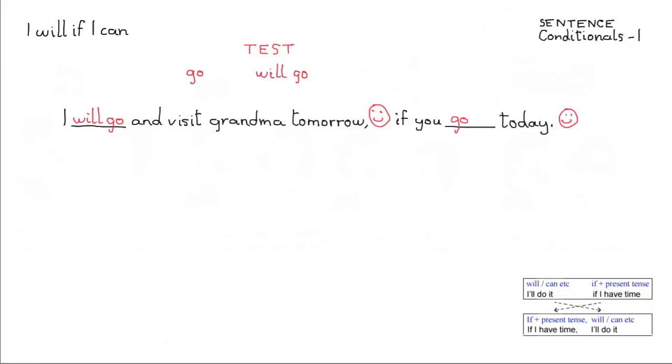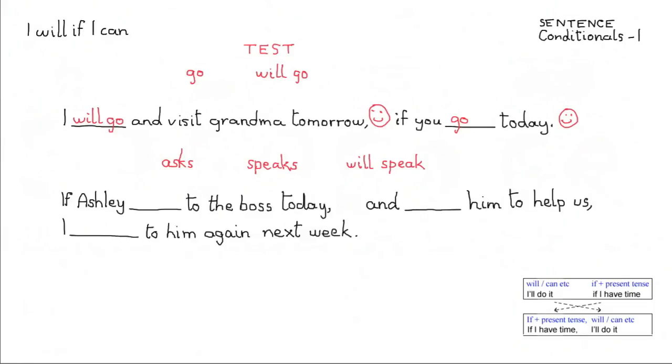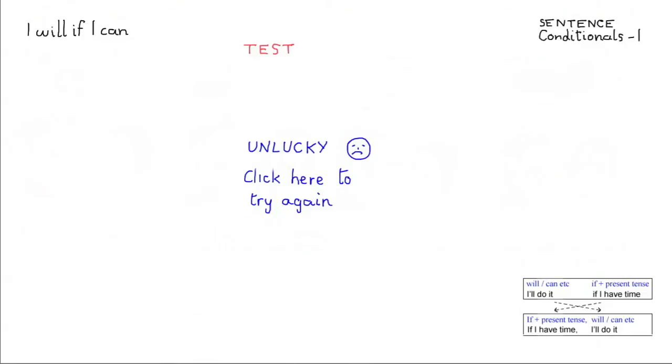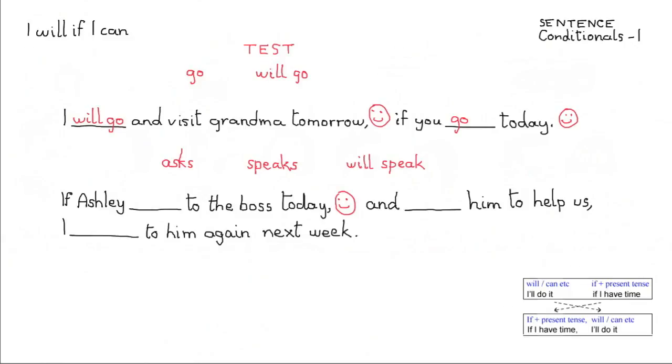Now I've got three options that I'm going to write here for the next sentence which has three blanks, asks, speaks and will speak. And here's the sentence for you to think about. Think of the first part first, if Ashley to the boss today. No, sorry, wrong answer, click here to try again. Yes, well done, I'll just write the answer in there, if Ashley speaks to the boss today.